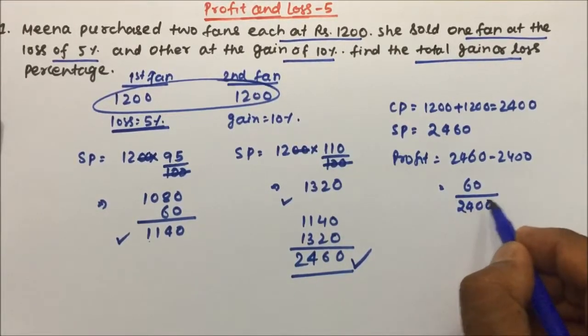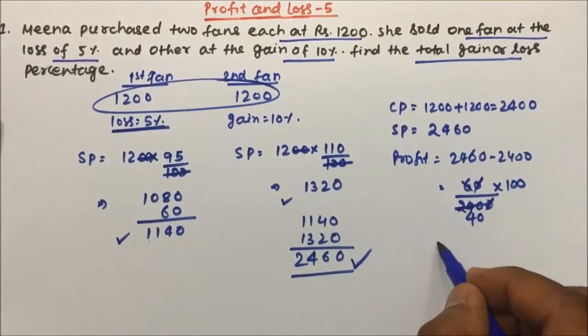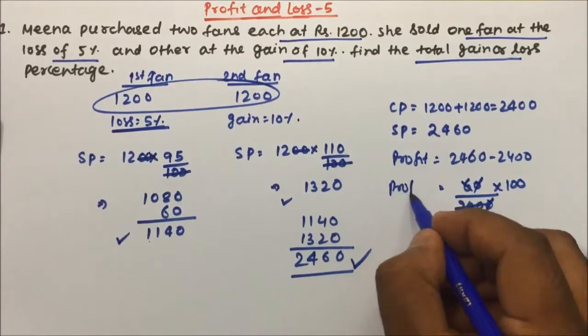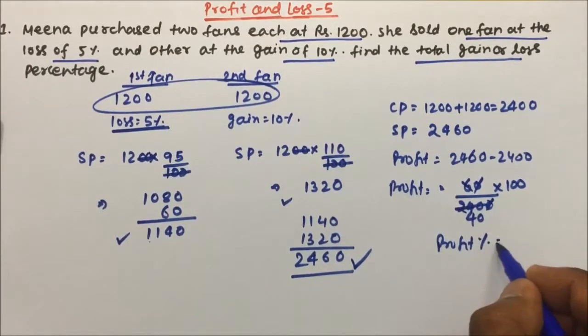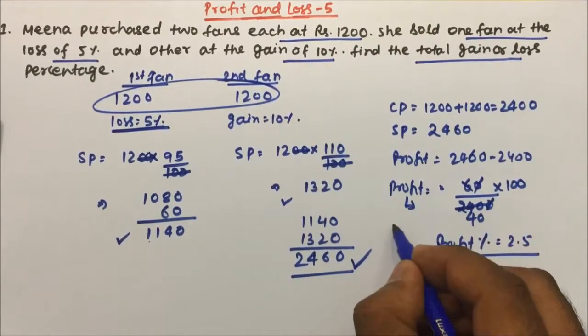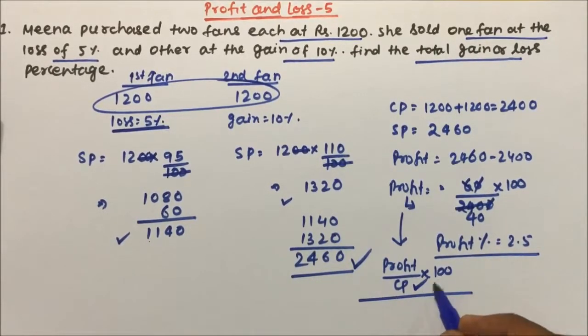Profit percentage we are calculating here. Profit percentage will be 2.5 percentage, because here profit percentage is profit divided by cost price into 100. Profit percentage will always be calculated on cost price. So my answer for this question will be 2.5 percent.